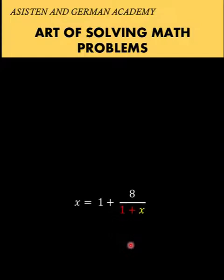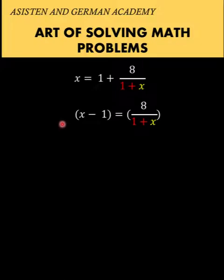So let's solve this equation. First, let's subtract 1 from both sides and multiply both sides of the equation by x plus 1 in order to eliminate the denominator.